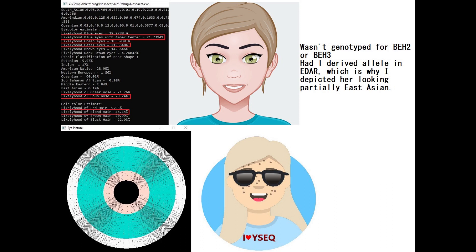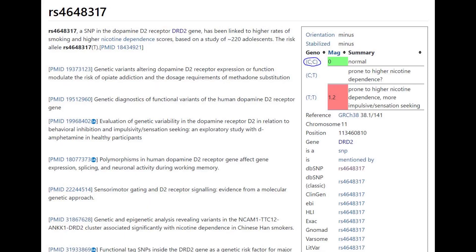I depicted her a little bit differently from most other West Eurasian people on my channel because she had one derived allele in EDAR, so I thought maybe I should make her look a little bit more East Asian since she had this gene. She wasn't genotyped for the PRO319 PRO variation or DRD2, so this was a pretty low-quality file — I had to either impute genotypes for some variations or just exclude them from the video.